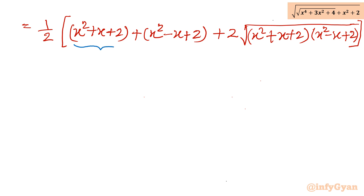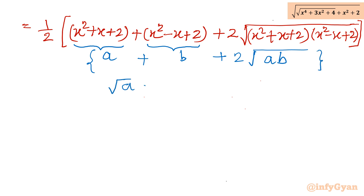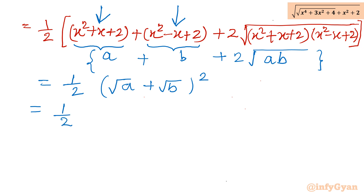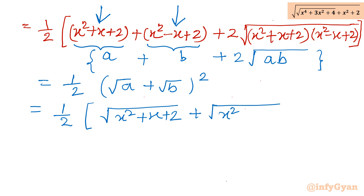Now if I consider x squared plus x plus 2 as a, and x squared minus x plus 2 as b, then the expression is a plus b plus 2 times square root of ab. This is again one identity — it is the perfect square of root a plus root b, whole squared. So I will write one half times square root of x squared plus x plus 2, plus square root of x squared minus x plus 2, whole squared.